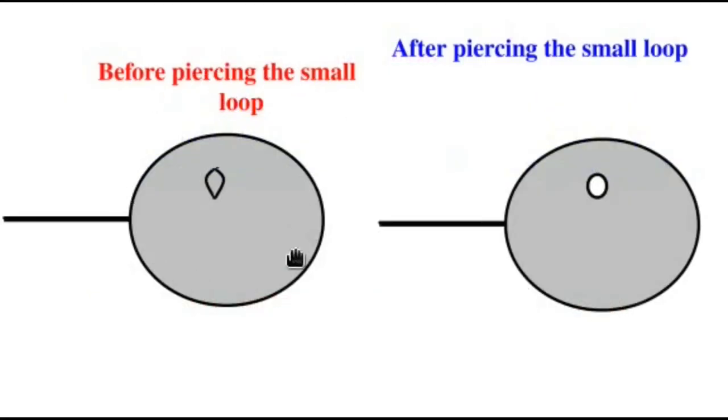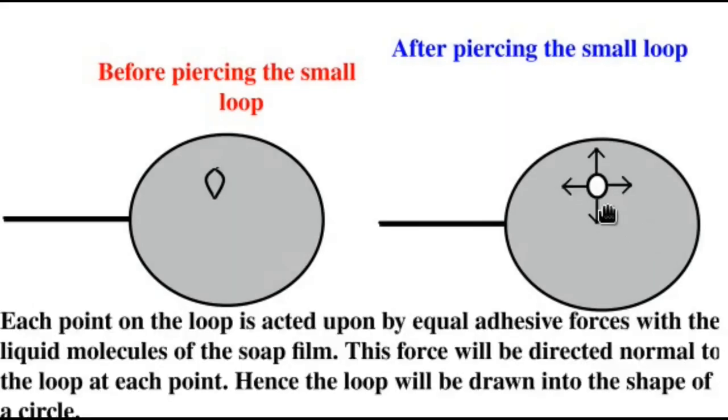So, this is before piercing the small loop. And once we pierce the thin film inside the loop, immediately it assumes the shape of a circle. So that the area of the film outside this loop will be minimized and the film will have the minimum energy. You can see that here actually, since it is a circular shape, the cotton thread will be acted upon at each point by the same force. So, therefore, there is a balanced force when this shape is circular. So, each point on the loop is acted upon by equal adhesive forces with the liquid molecules of the soap film. This force will be directed normal to the loop at each point. So, therefore, the loop will be drawn into the shape of a circle.